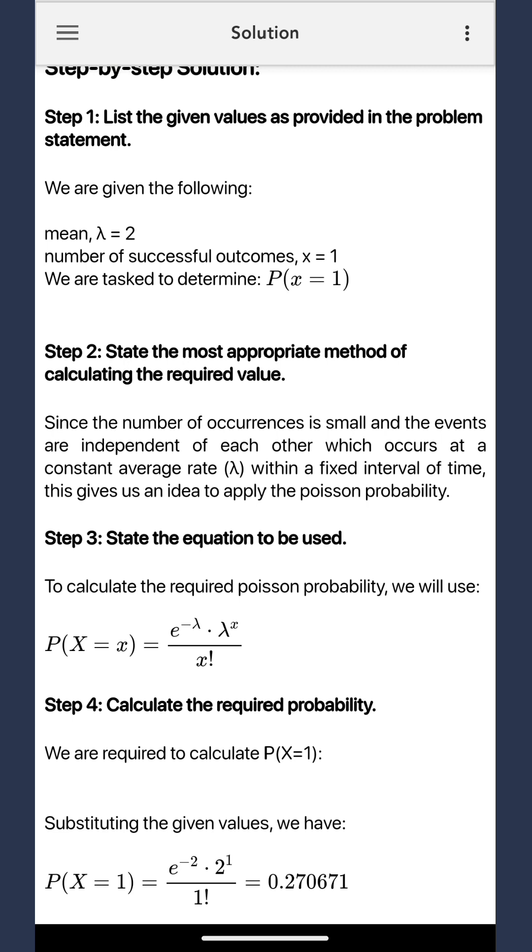Now, here's the catch. Many assume it's a straightforward 0.5. After all, if the average is 2, shouldn't it be equally likely to be 1? But here's the twist.